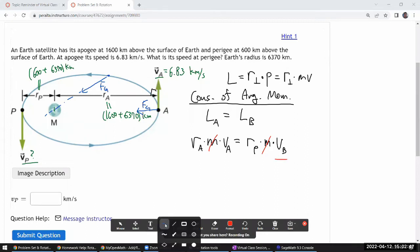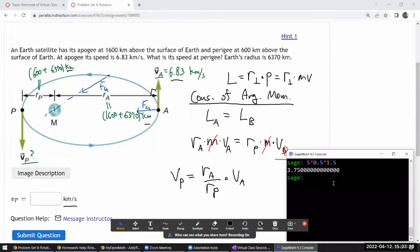Masses cancel out, which is great because the question didn't give us that. So I can just solve for the speed at perigee. The expression for speed at perigee is equal to the ratio of the two distances, ra over rp, times the speed at apogee. Because of these ratios, I'm going to just rely on the units to cancel out. The final answer I want is in kilometers per second, so I'll just plug this directly in.